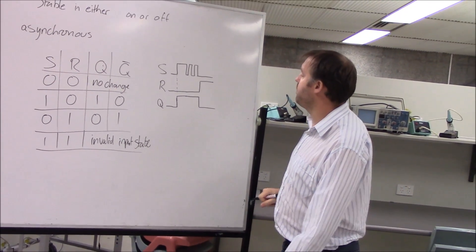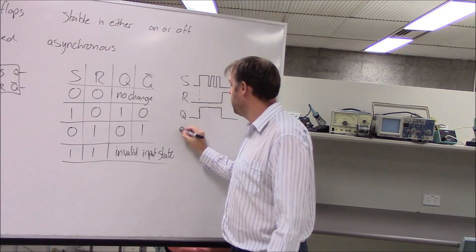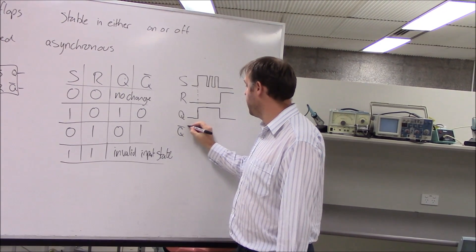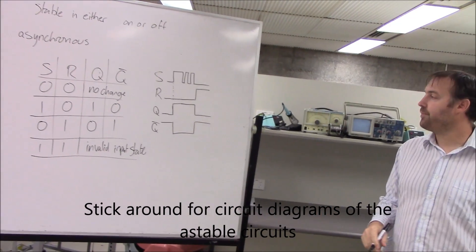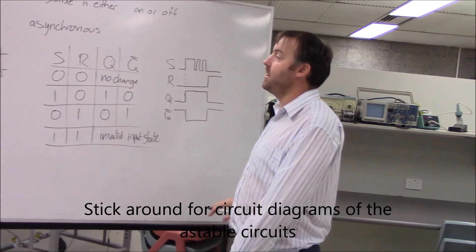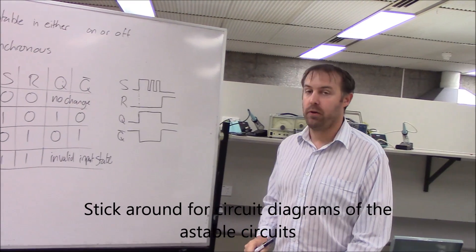Yep. So if I want to draw Q-bar here, it would just be the complement of that. That's the SR asynchronous flip-flop.